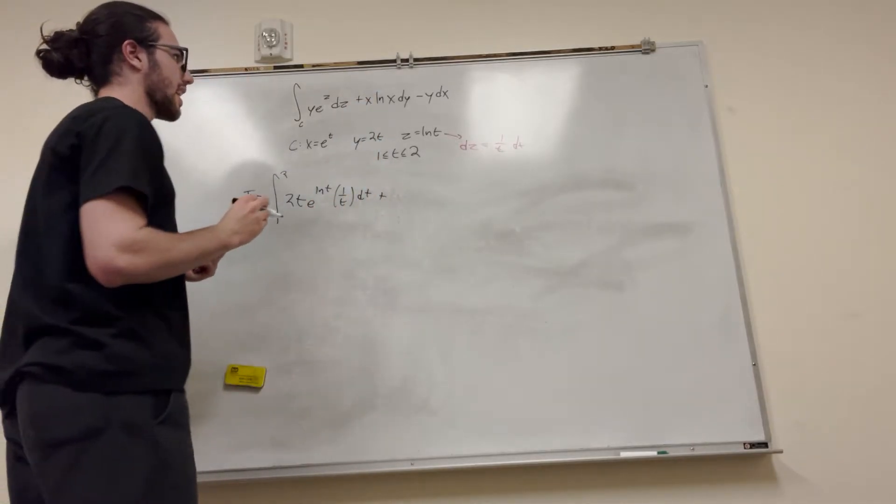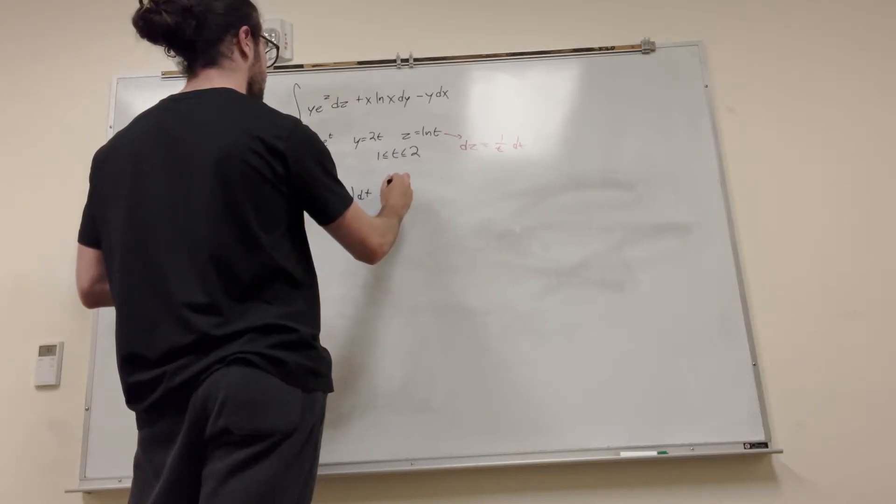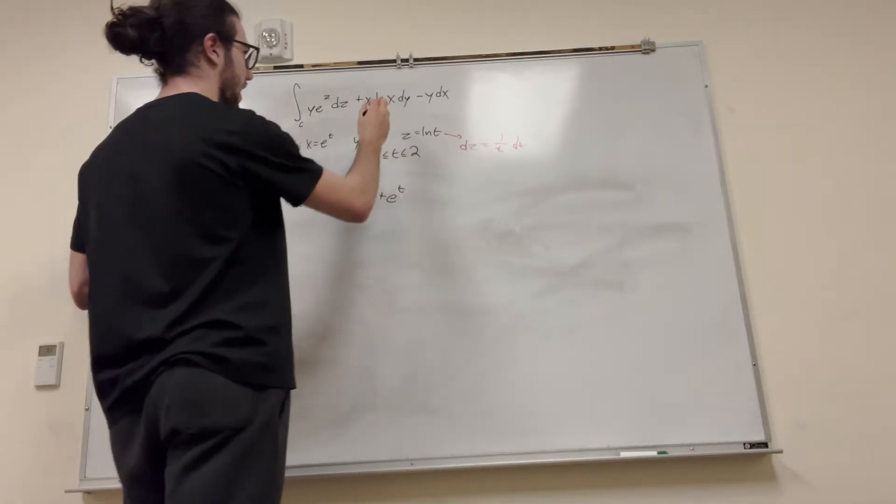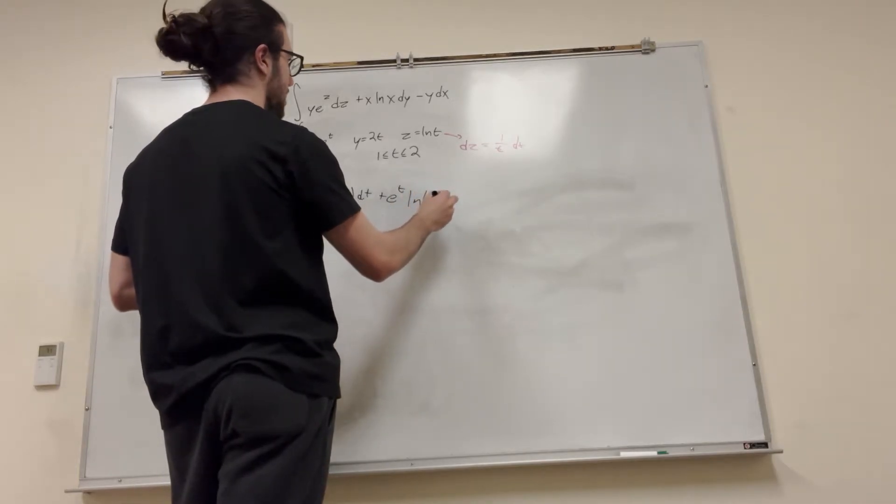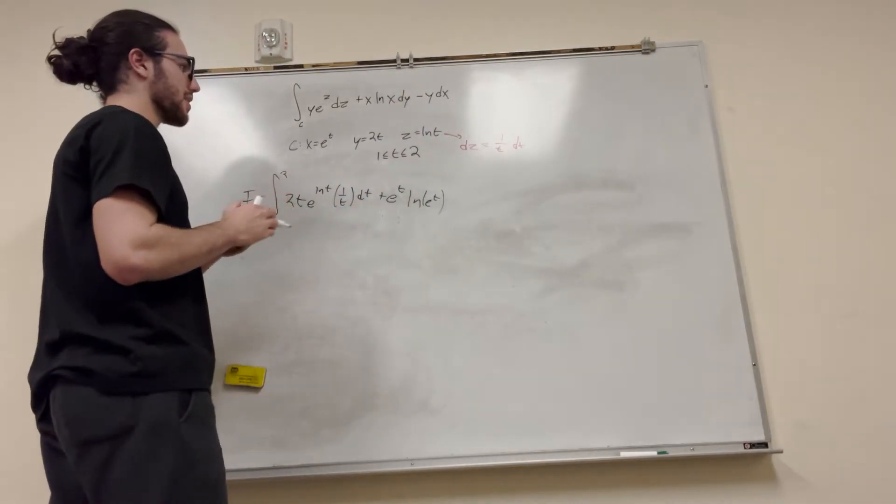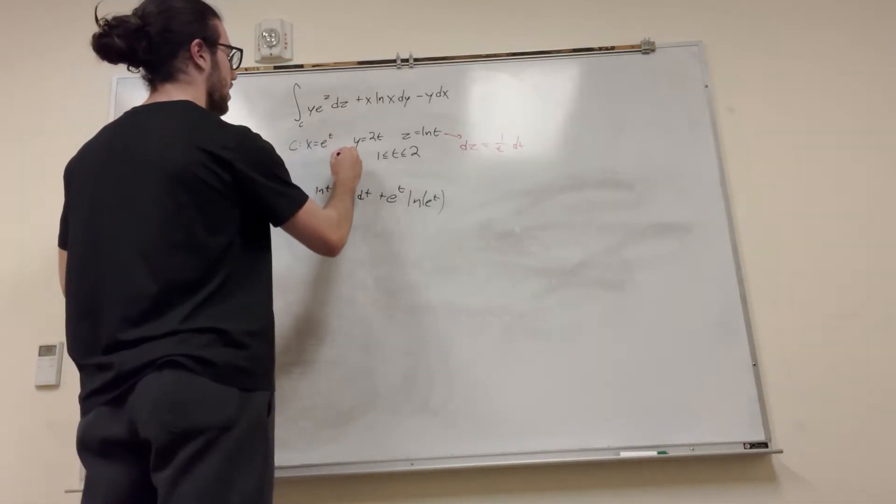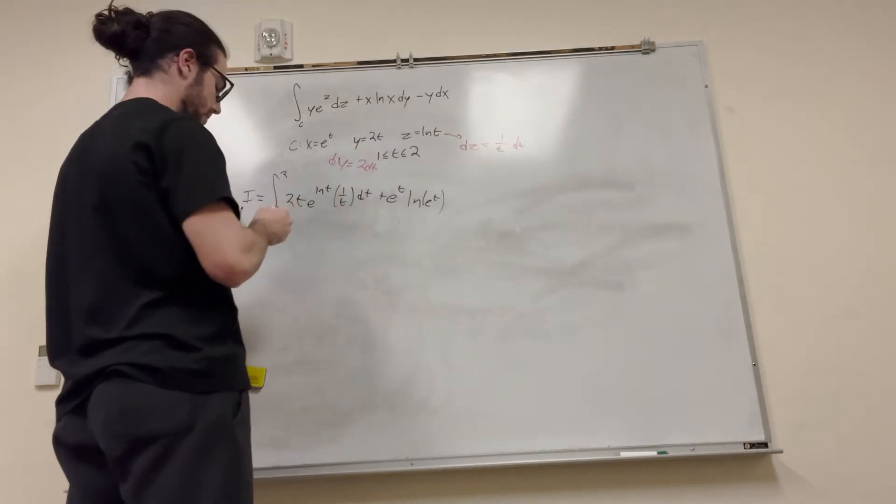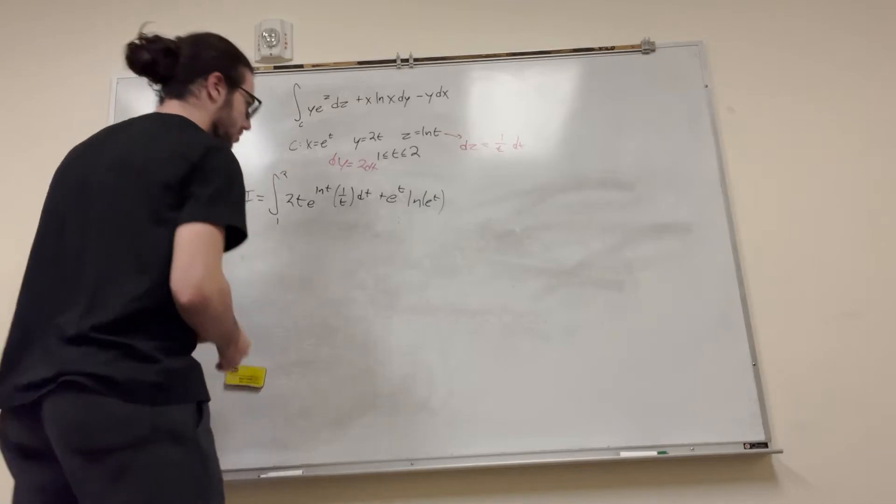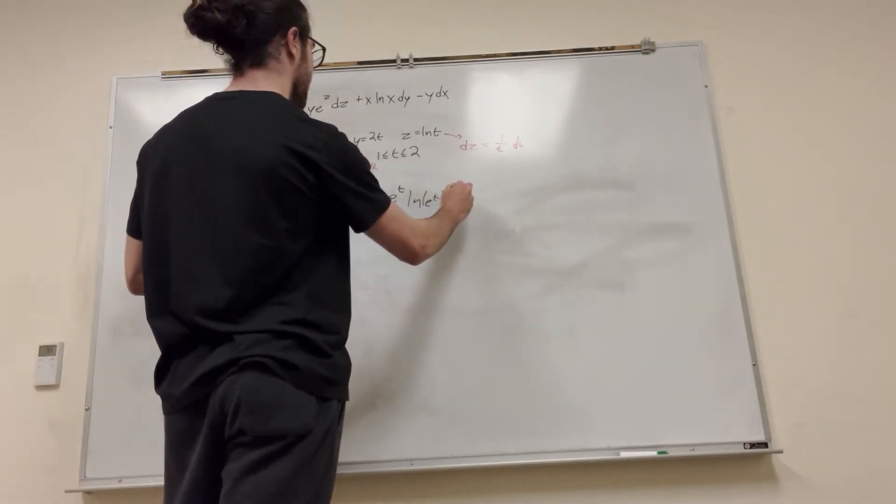Now we have, again, x ln x. So x is equal to e to the t. So e to the t. ln of x is the natural log of e to the t. That's just going to become t. dy. So we have to do the same thing for dy. What is dy going to become? It's going to become 2, pretty obviously. Let's do that. dy is equal to 2 dt. So what we're going to have to do is multiply all of this by 2. 2 dt.